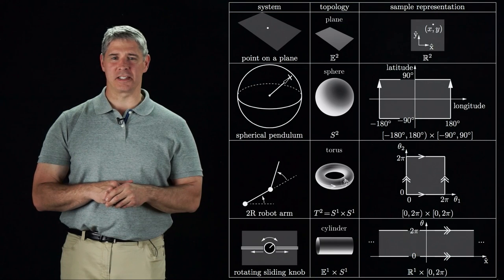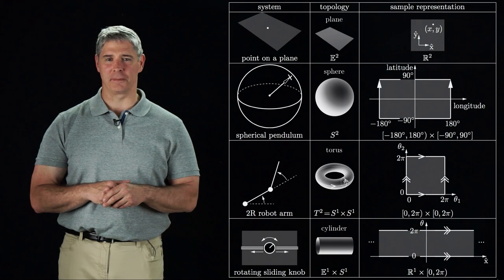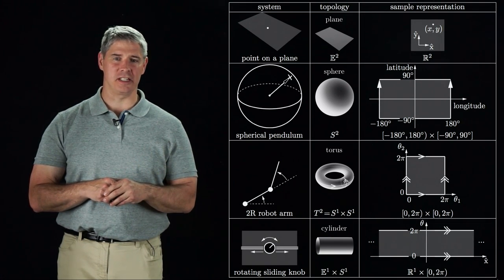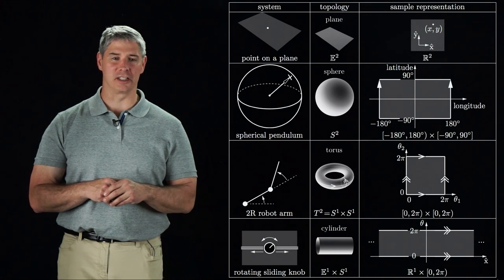In summary, C-spaces of the same dimension can have different topologies. In the next video, we discuss different ways to represent C-spaces that are not flat Euclidean spaces.